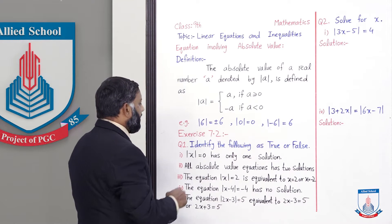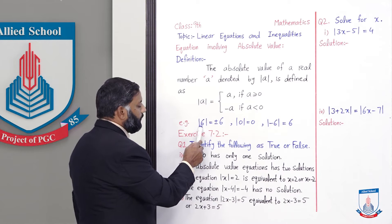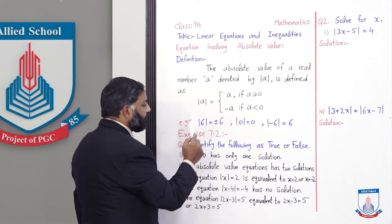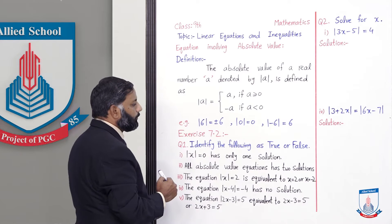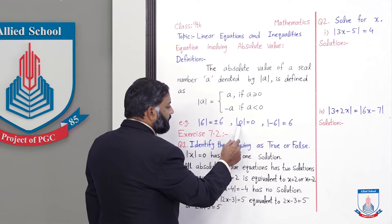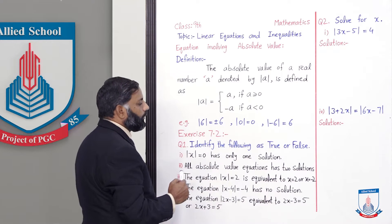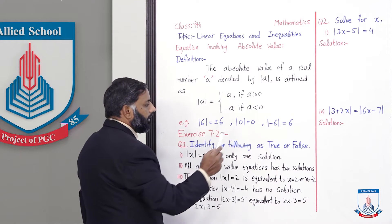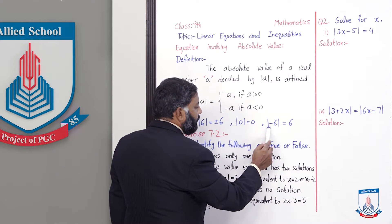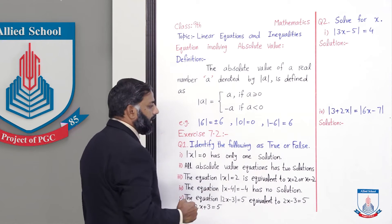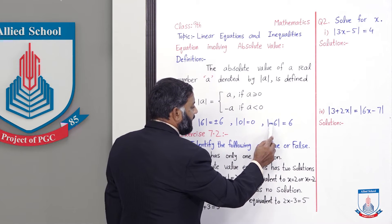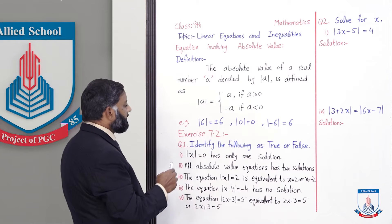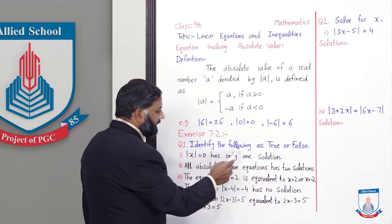For example, the absolute value of 6 — to remove the absolute value, we place a plus-minus sign, so |6| = ±6, giving positive 6. The absolute value of zero is always zero, because zero has neither a positive nor negative sign. And |-6| equals positive 6. So if a negative value appears inside absolute value, we can write it as positive — the absolute is removed.